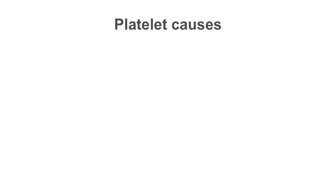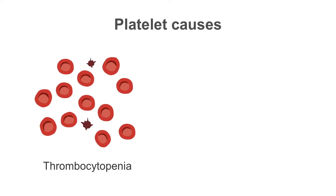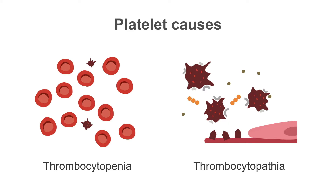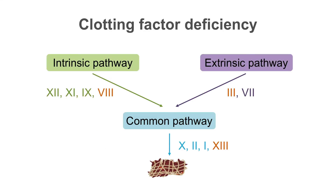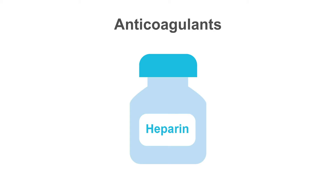So what are the causes? Coagulopathy may arise from platelet issues such as thrombocytopenia or thrombocytopathy. It may also result from clotting factor deficiencies or the presence of anticoagulants, such as heparin and direct thrombin inhibitors.